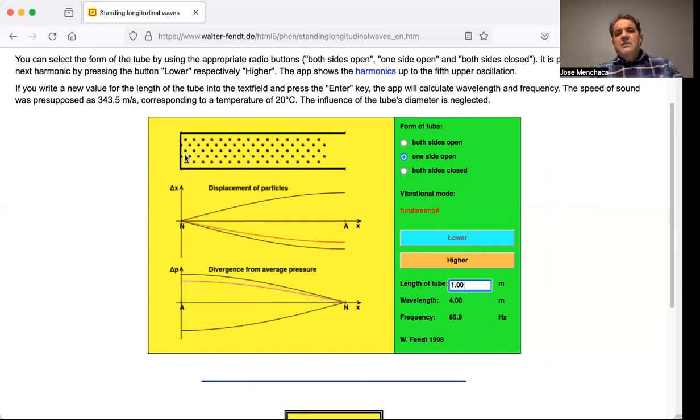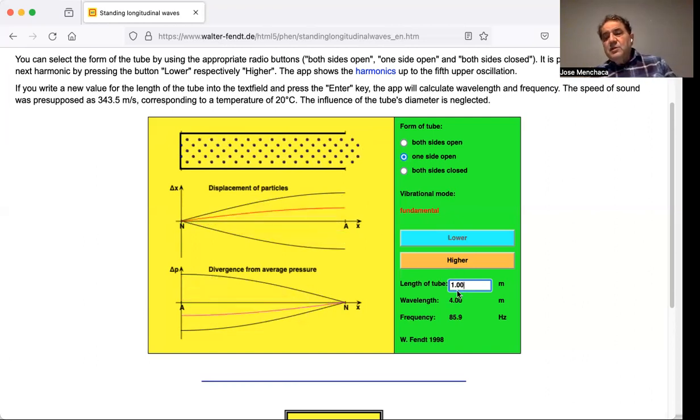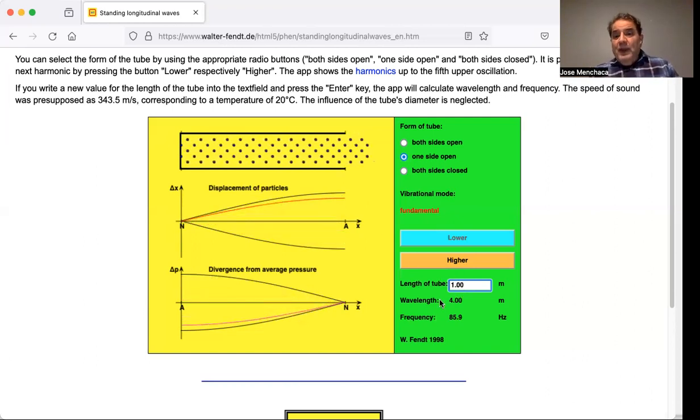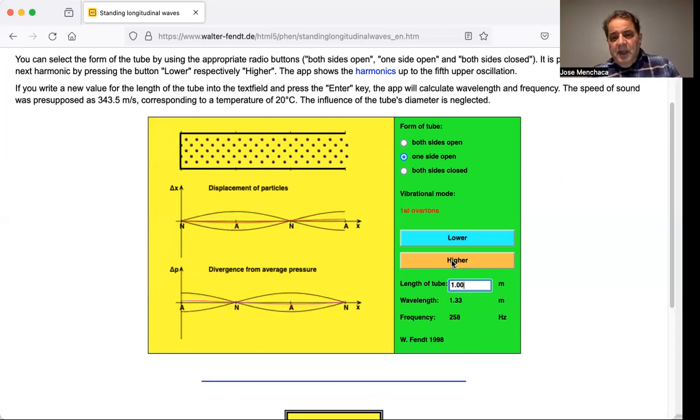Here where it's closed, the molecules can't move, so you get a node. And so it's only from one node to an antinode. That's a quarter wavelength. So you'll see here, the length of the tube is one meter, but the wavelength is four meters, because it's only a quarter of a wave.